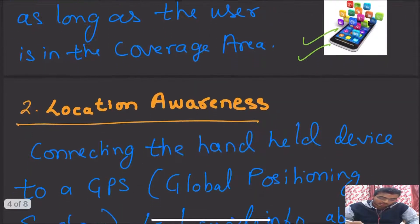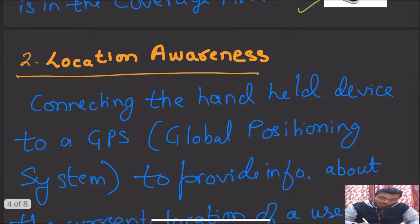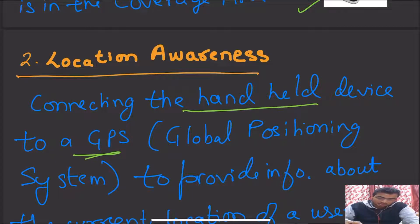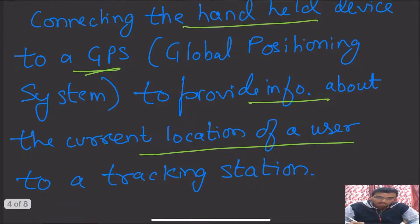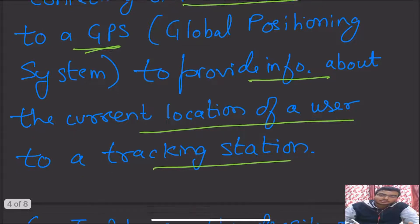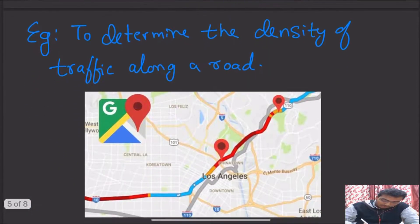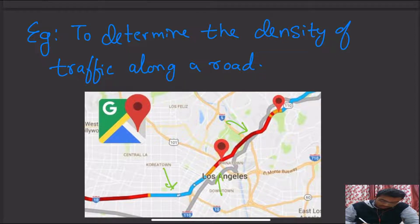Our second point is location awareness. Connecting the handheld device with a GPS — that is, Global Positioning System — for providing information about the current location of a user to the tracking station is known as location awareness. An example of this would be Google Maps. You are able to see the density of traffic along a road — whether there is no traffic, less traffic, or too much traffic — and that information is gathered through location awareness of a mobile device.